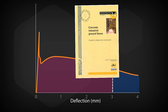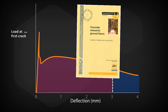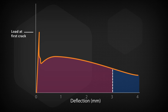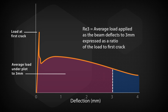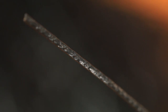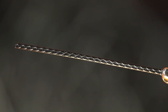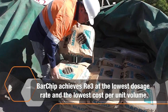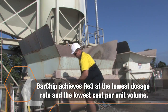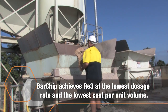The UK Concrete Society Technical Report 34 states that a minimum fiber dosage should be sufficient to give an RE3 of 30%. Because of bar chip fiber's optimum design, it achieves this value at the lowest dosage rate and the lowest cost per unit volume in the market.